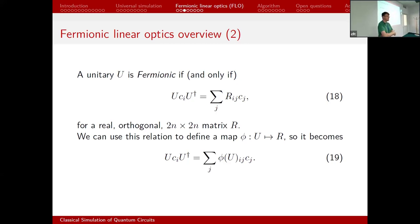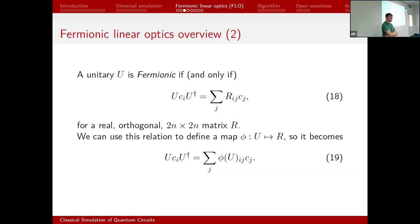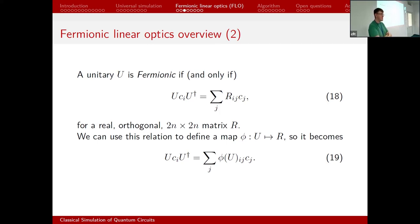Question from the audience: are there any physical devices that actually implement fermionic linear optics? The answer is basically no. The fermions in fermionic linear optics are spinless, and spinless fermions as such don't really exist in nature. You could fake it with one spin component of a multi-component system, if there are no interactions that would flip the spin — but I don't think anyone does this. And there would be no reason to build a quantum device based on something you can efficiently classically simulate.